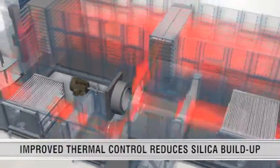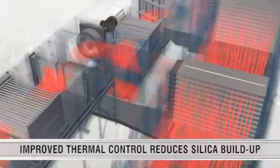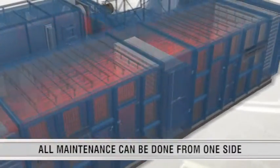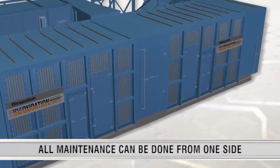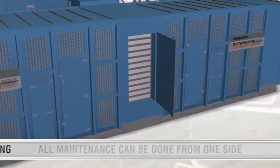Improved heat exchangers in the split-zone oven can drastically reduce silica oxide buildup that can affect uniformity. Any maintenance that is still required can all be done from one side of the oven with zero disturbances to the fiber.